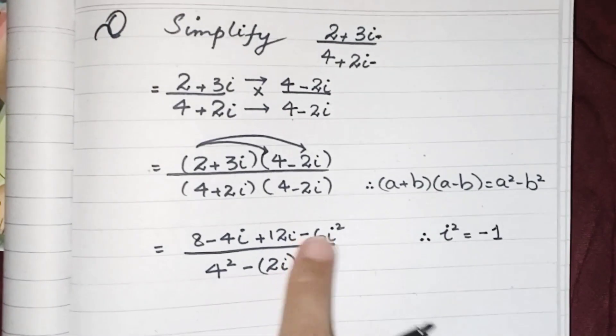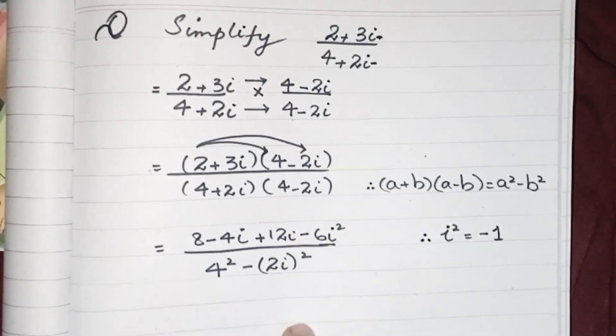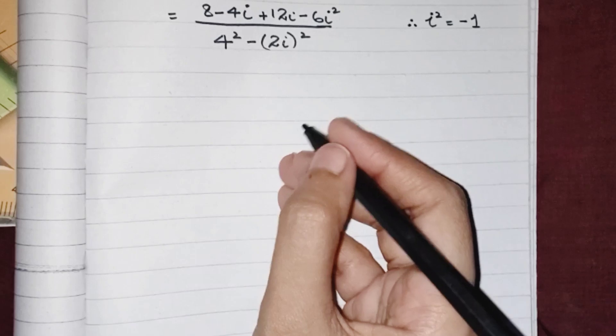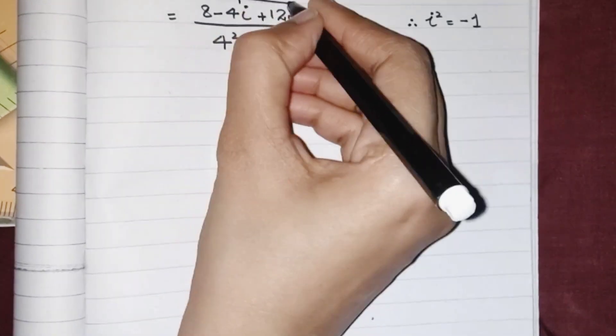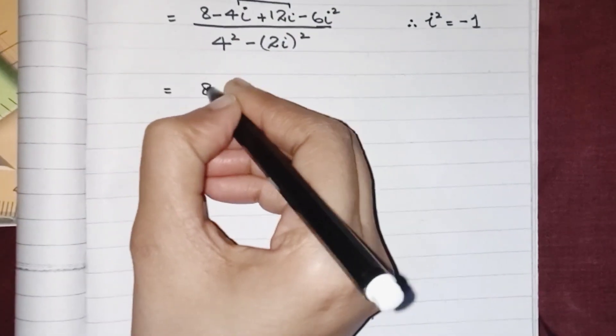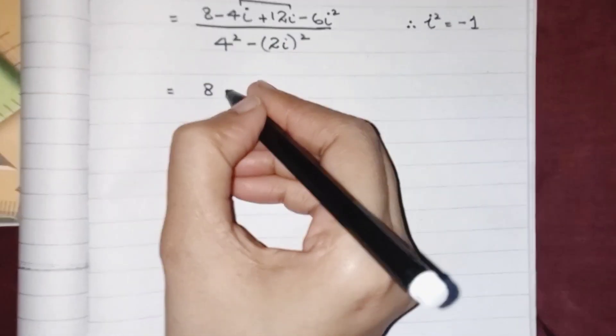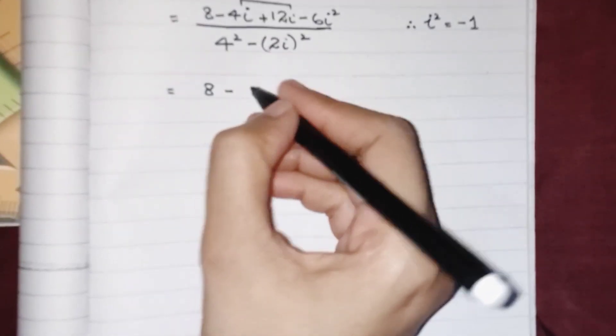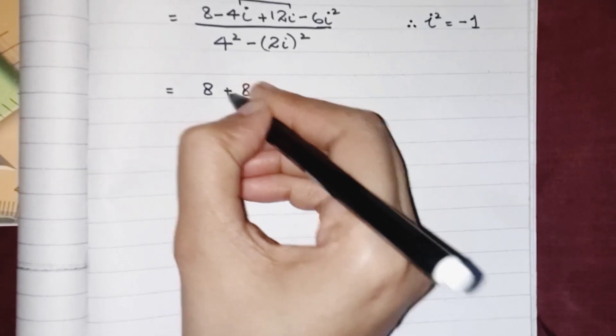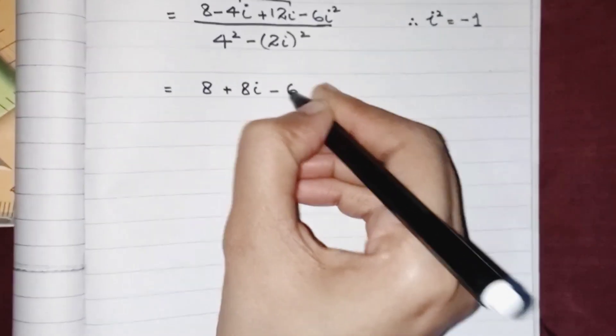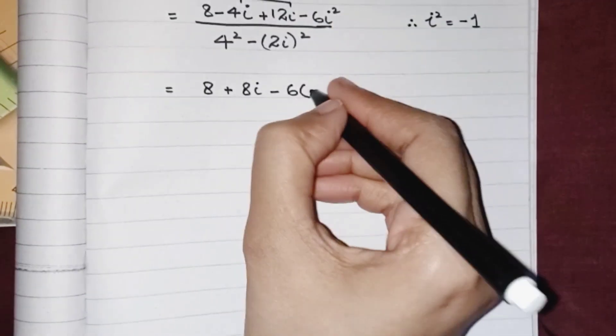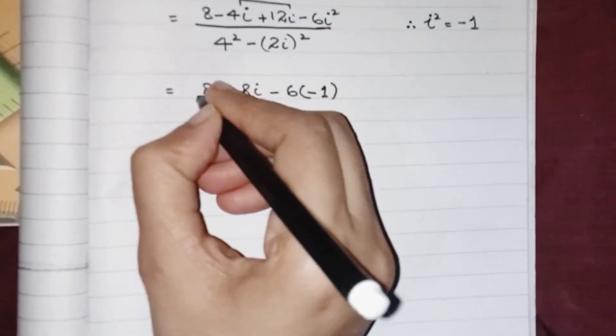Now over here we know i squared will be equivalent to minus 1, so we have to substitute the value of i squared over here. Now these are like terms so we can add them or subtract accordingly. 8 minus 4i plus 12i will result as 8 plus 8i minus 6, and in place of i squared we have to write minus 1.